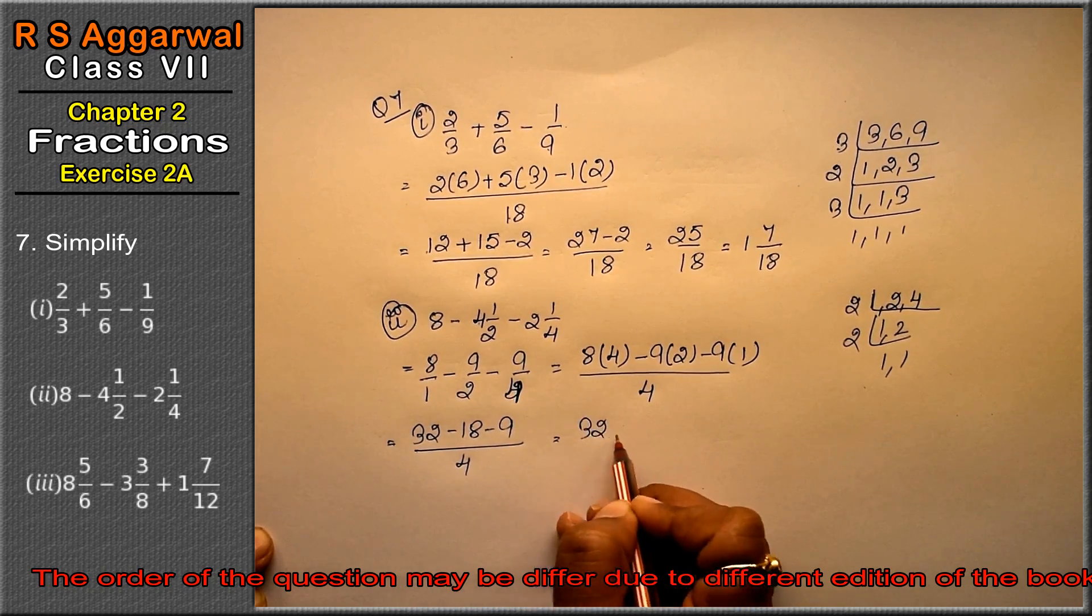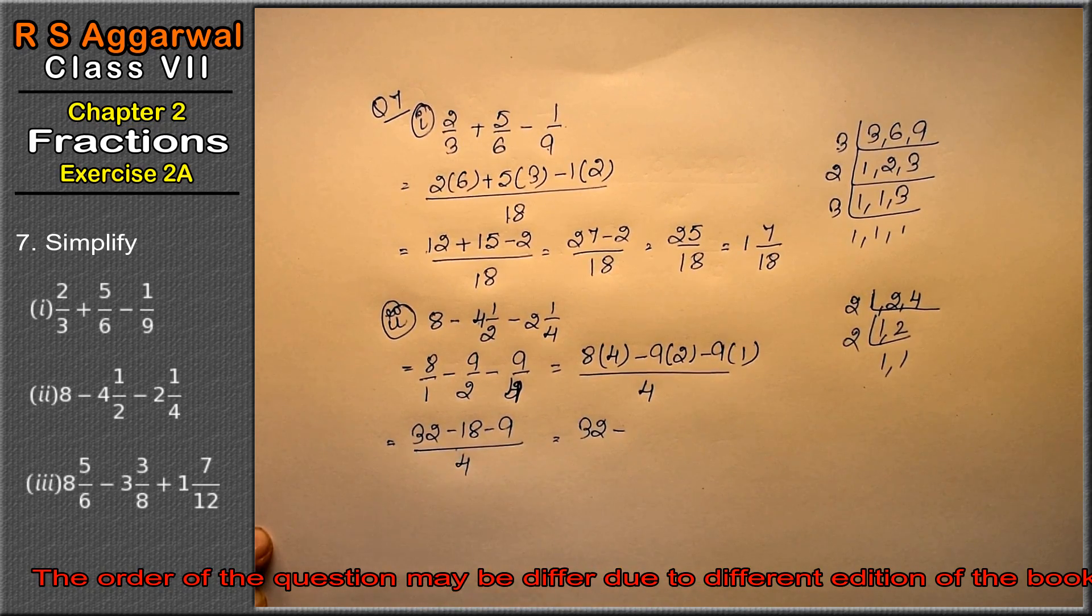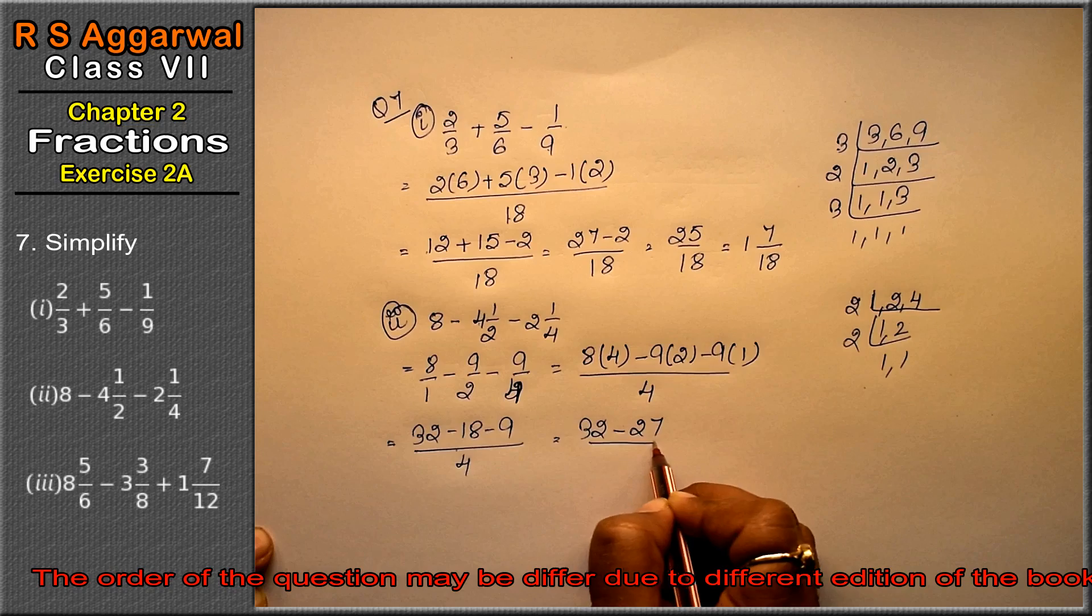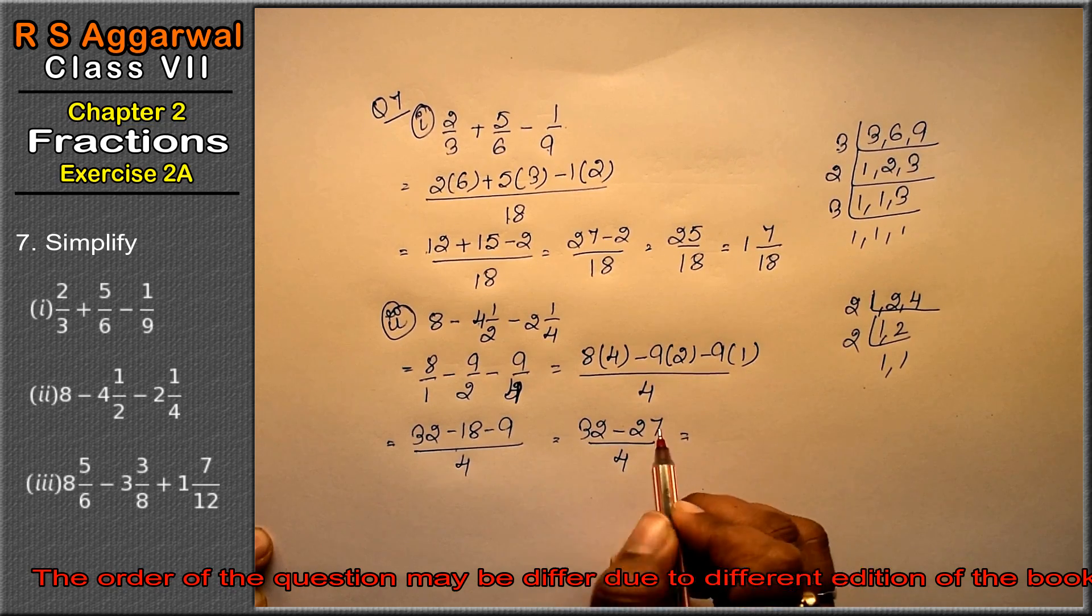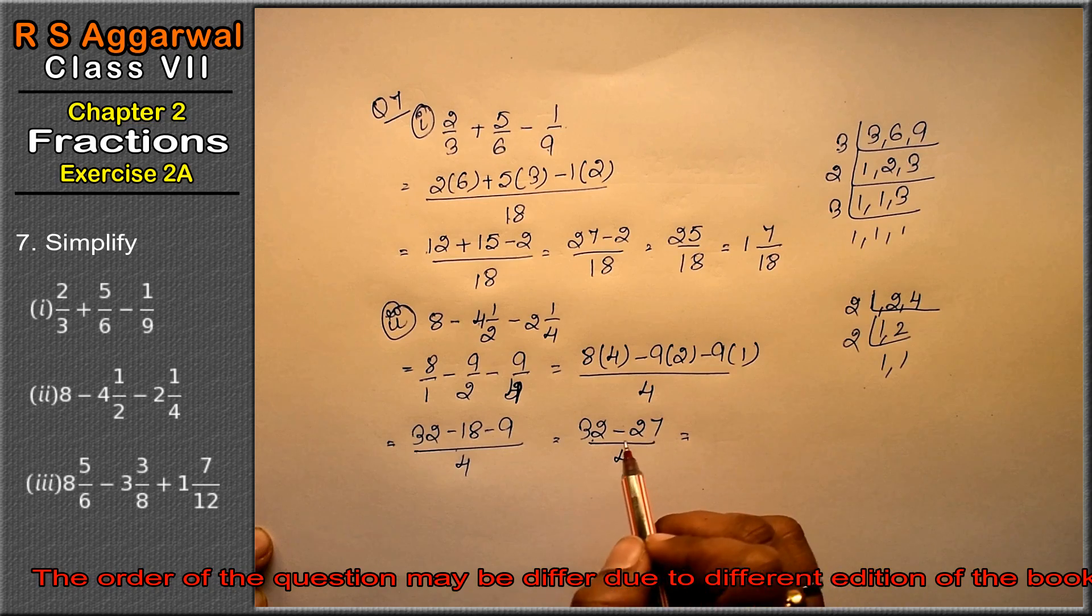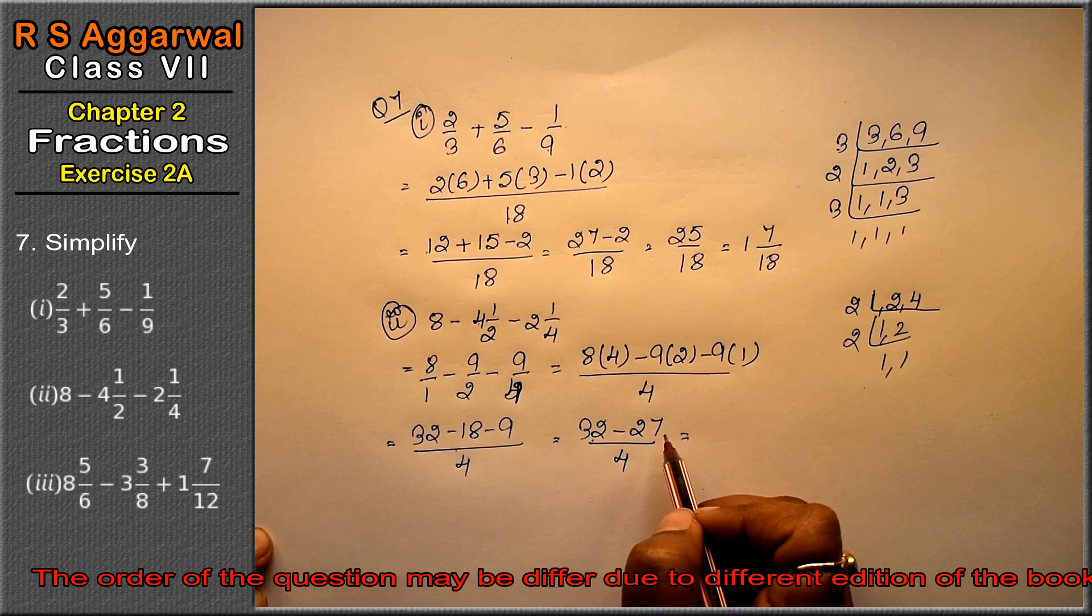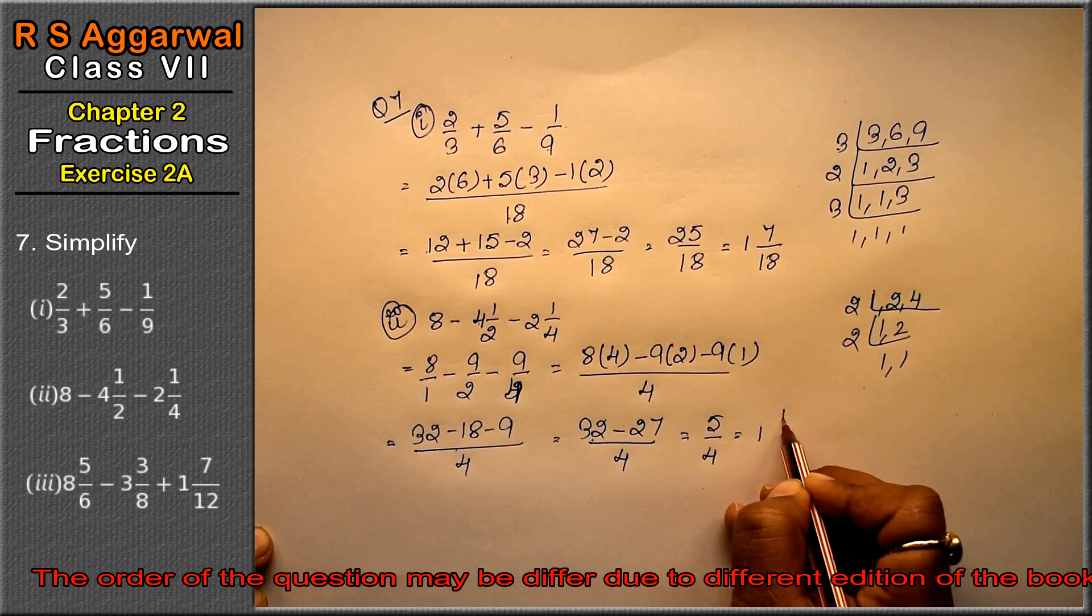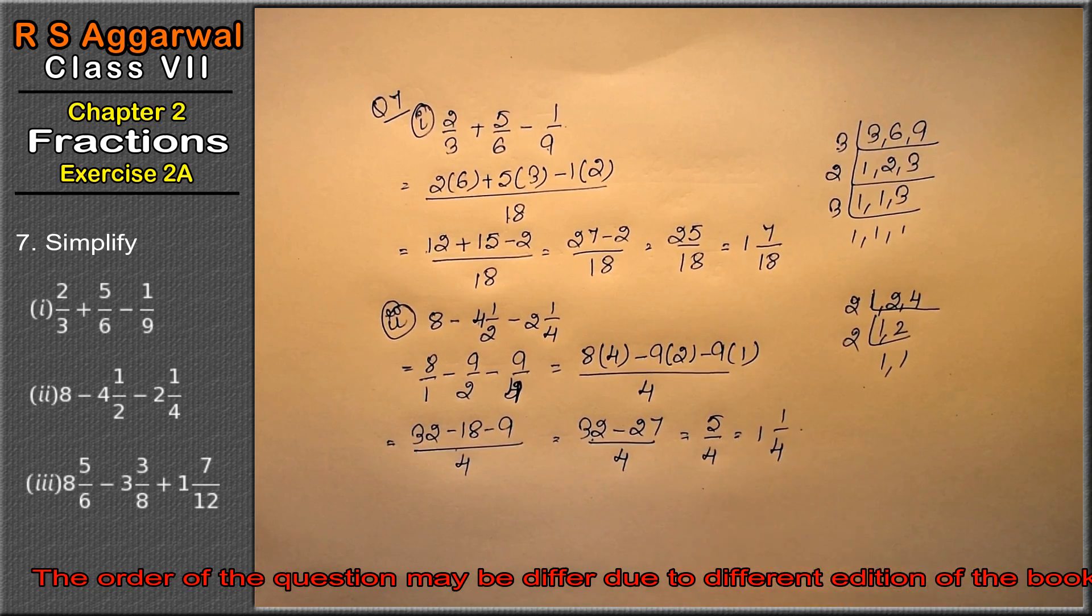So this is how come 32 minus 27 upon 4, so this is how come 5 upon 4, or we can say that 1 whole 1 upon 4 is the answer.